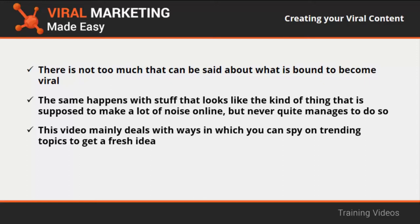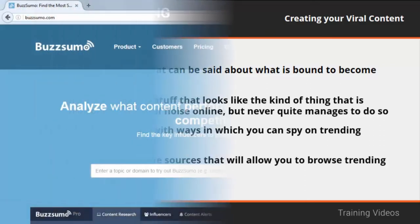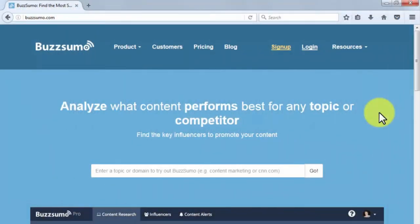There are plenty of online sources that will allow you to browse trending topics. We recommend BuzzSumo.com — this website allows visitors to use any keyword to see how it relates to trending topics. Enter a keyword in the search bar and BuzzSumo.com will show you results related to that keyword, with the first results being posts that have gone viral on social media. You can filter results by date, language, country, and content type.